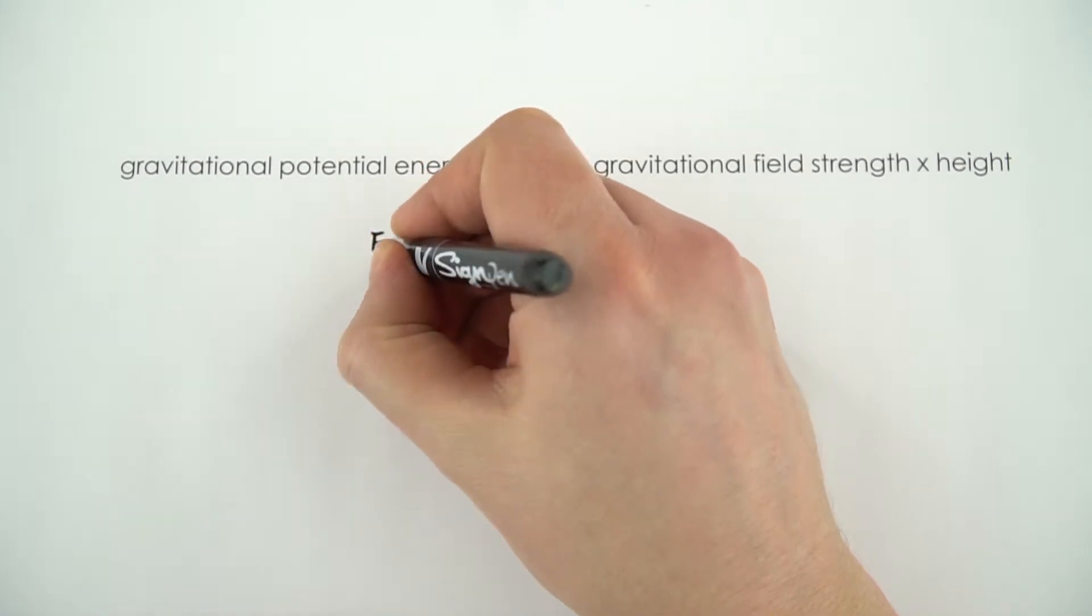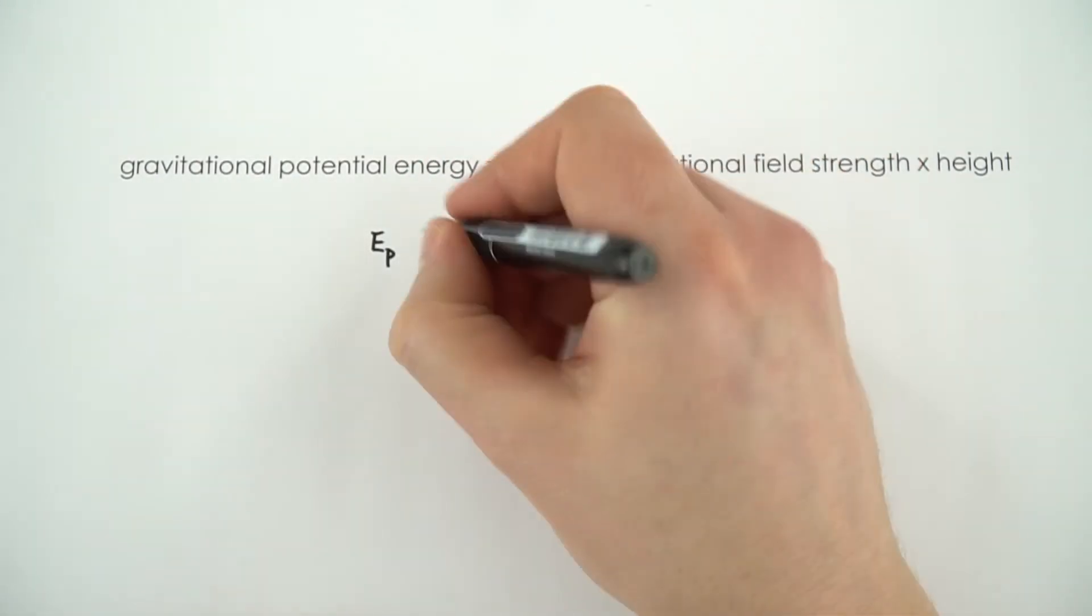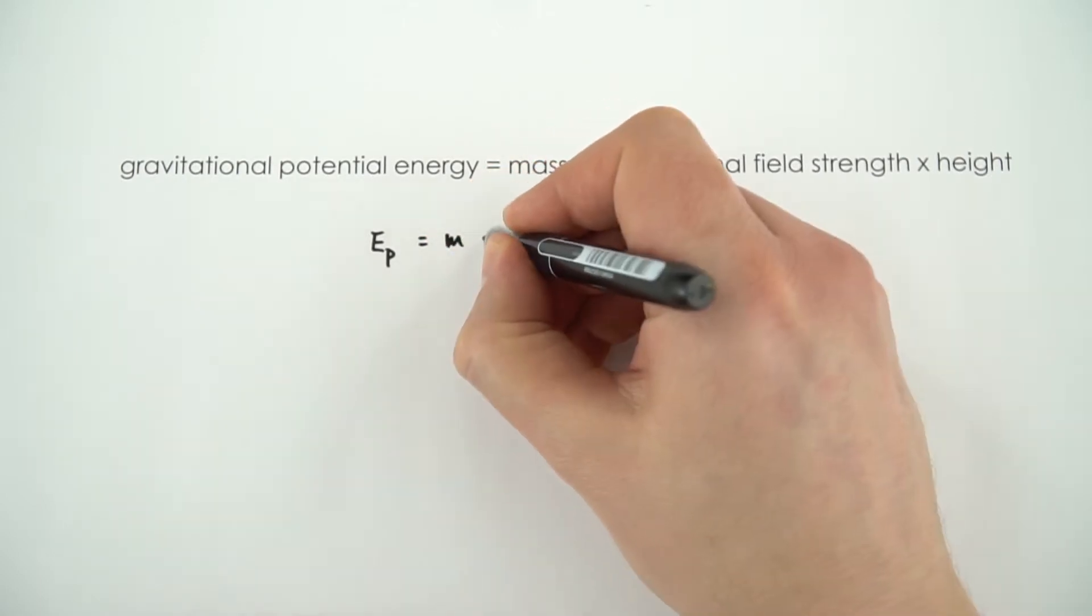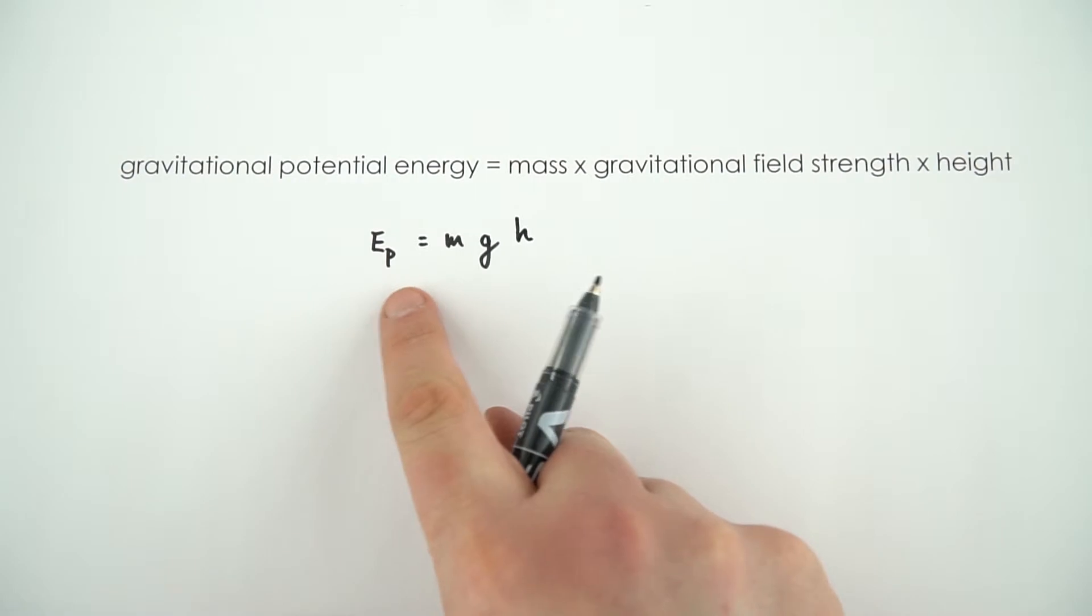So what we can shorten it to is Ep, and this is energy in the gravitational potential store, is equal to the mass times the gravitational field strength times height. Ep equals mgh—a little bit shorter than this.